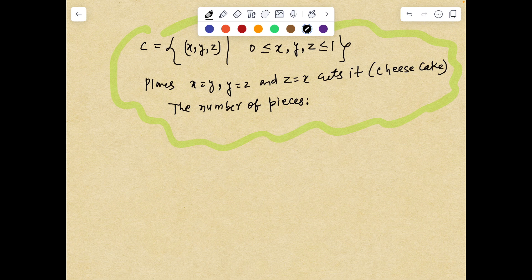Let us say a plane in the form of a knife cuts this cheese cube along the planes x equals y, y equals z, and z equals x. We have to find the number of pieces in which this cheese cube is being cut, provided we are not separating the pieces until all three cuts are made.